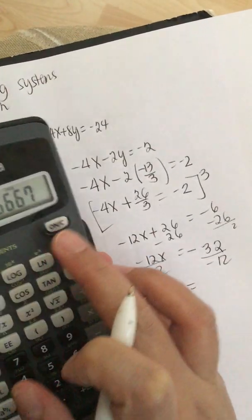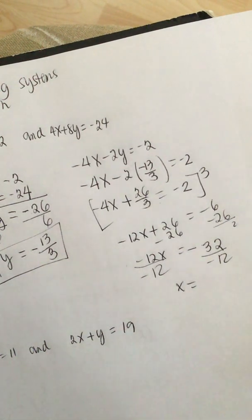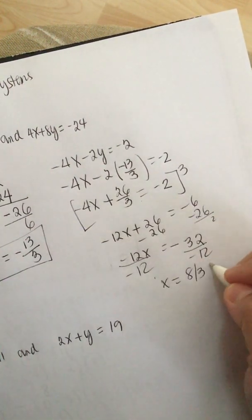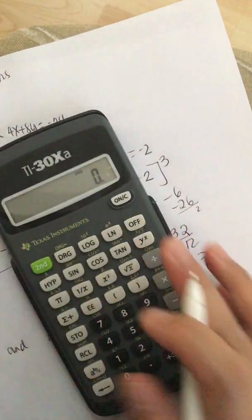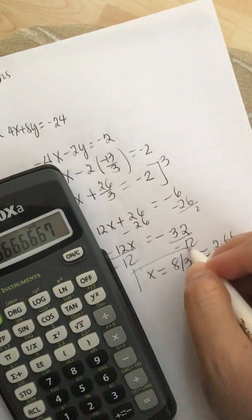Let's just reduce it. So 32 divided by 2 is 16, and 12 divided by 2 is 6. This is negative. Oh, this is positive now. So it's -8 thirds or it's about -8 divided by 3, 2.66. So here is x.